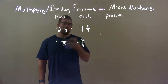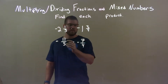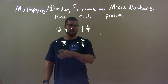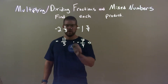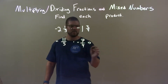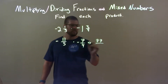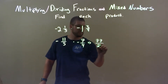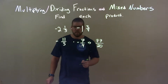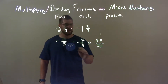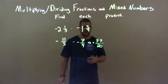Now, the way we multiply our fractions, we multiply across the numerator and then multiply across the denominator. So, numerator: 11 times 7 is 77. Denominator: 5 times 4 is 20. A negative times a negative is a positive, so we have a positive number now.